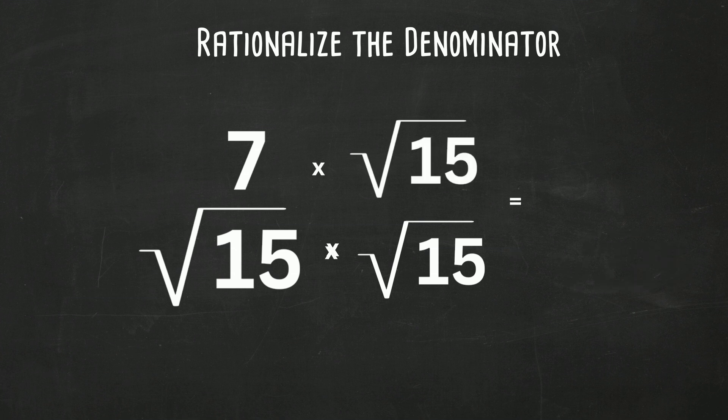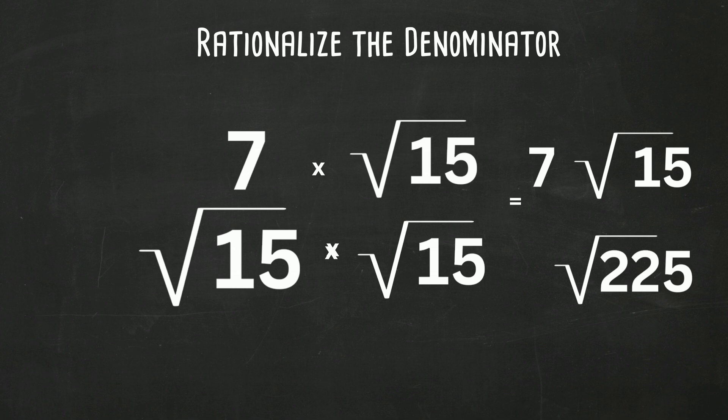7 times the square root of 15 is 7 square root of 15. And then the square root of 15 times the square root of 15 is the square root of 225. And we will rewrite that as 7 square root of 15 over 15.